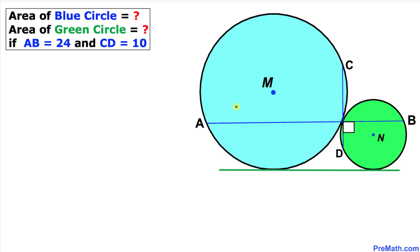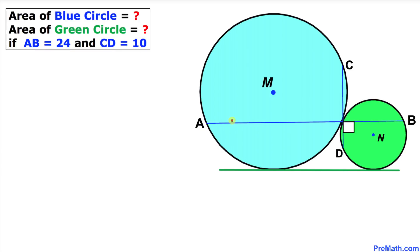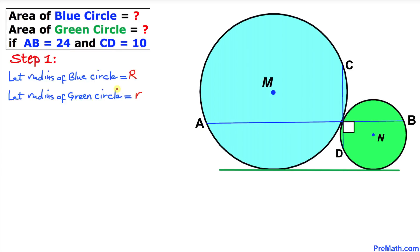Welcome to Pre-Math. In this video tutorial, we have blue and green circles that are tangent to each other, as shown in the figure. The line segment AB is 24 and the line segment CD is 10. We are going to calculate the area of the blue circle as well as the area of the green circle.